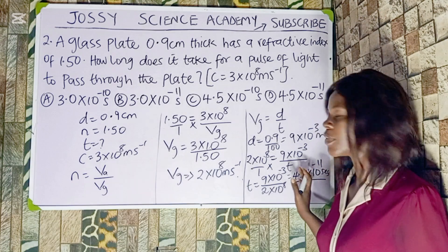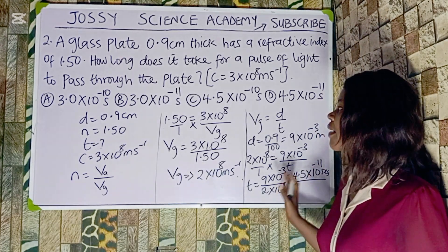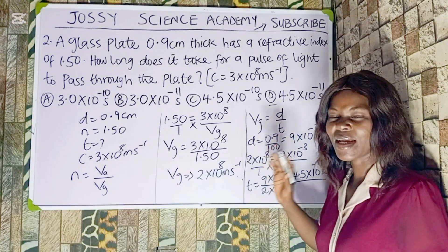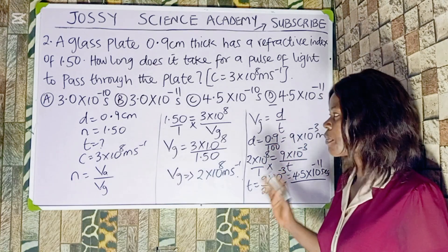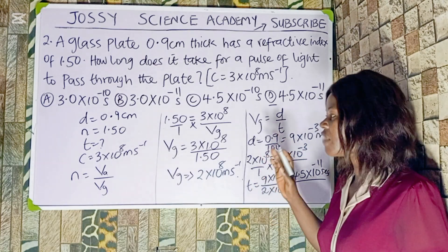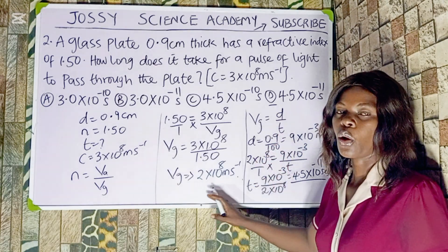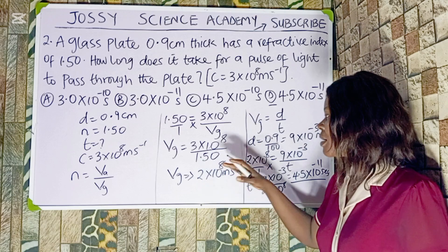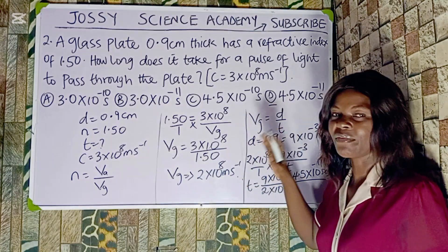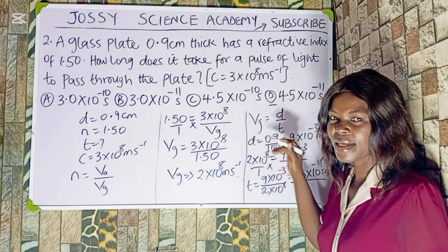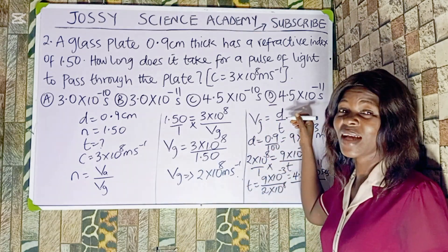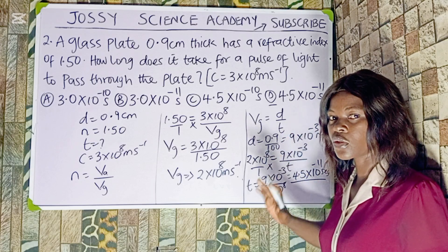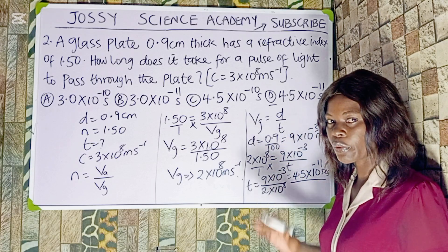So from what we have gotten, our answer is D. This is how you solve this type of problem: first get the velocity of light in the second medium which is glass, then remember that velocity is distance over time. They've given us the distance, and we find the time.